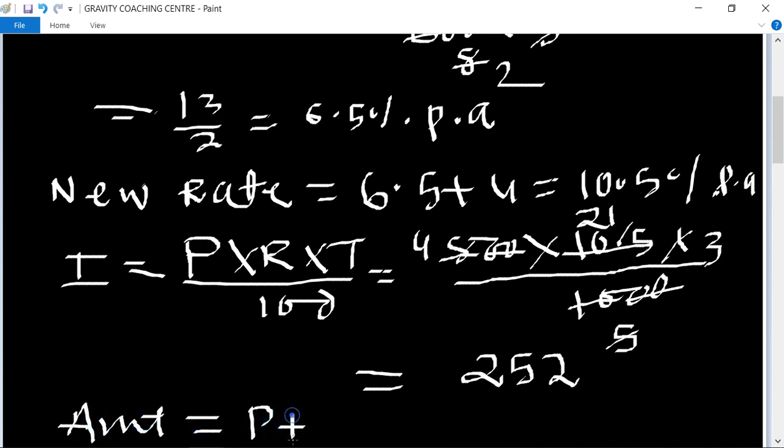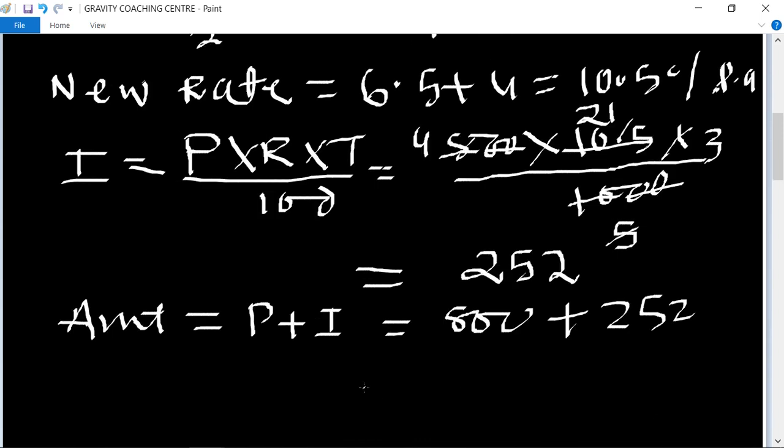Principal plus interest. Principal equal to 800, then its interest equal to 252. In total, amount equal to 1052, which is the required answer, rupees.